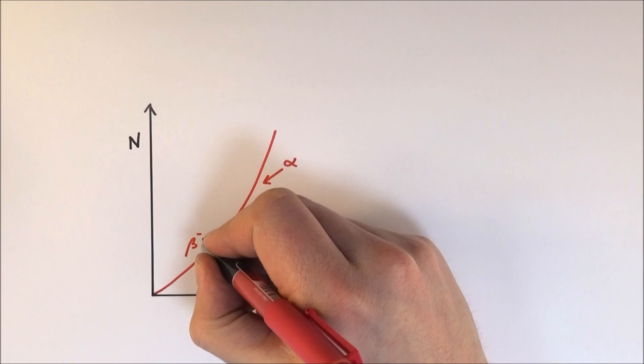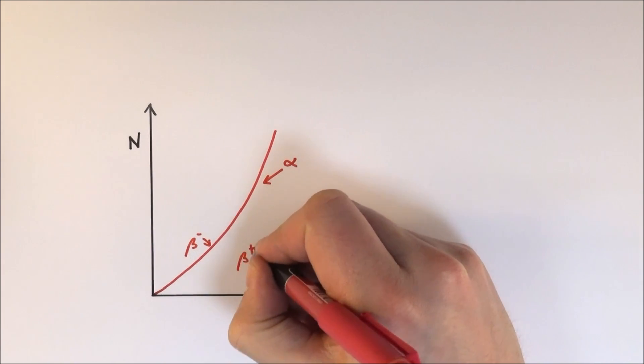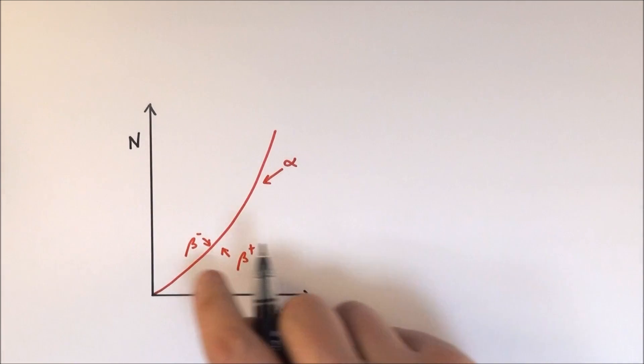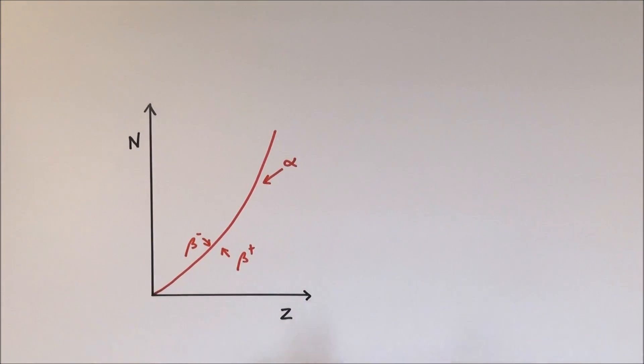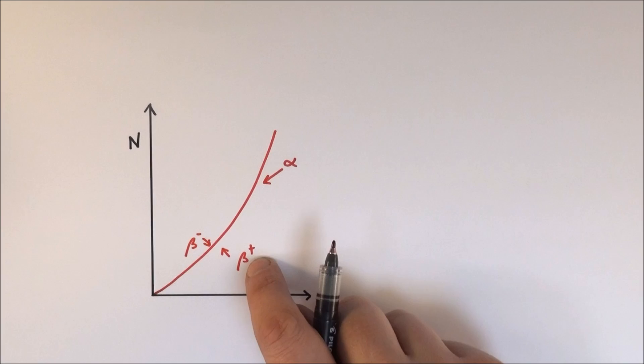We also get beta minus given out and also beta plus, and by giving out radiation they become closer to the line. And I'd like to look at this one here in a bit more detail.